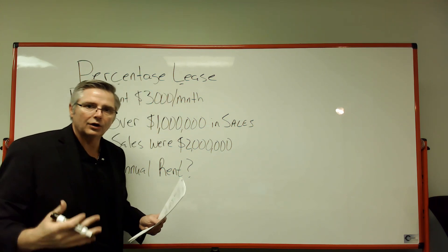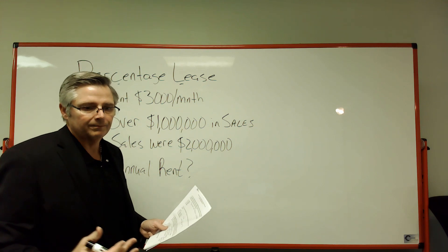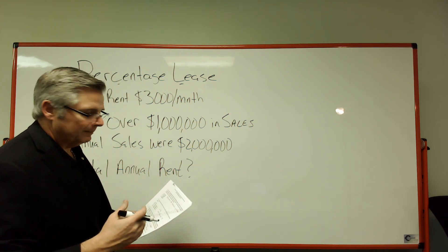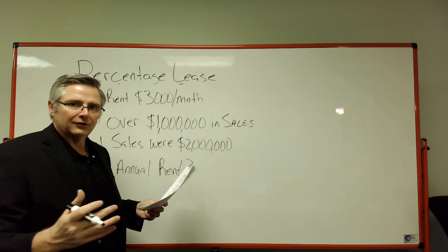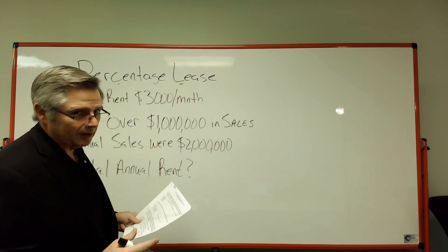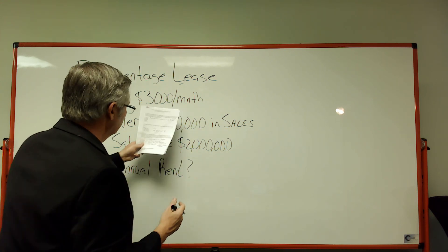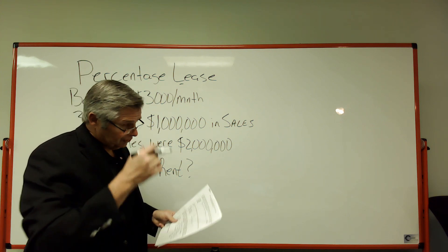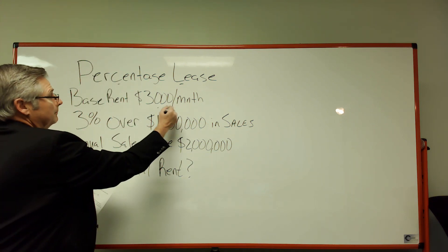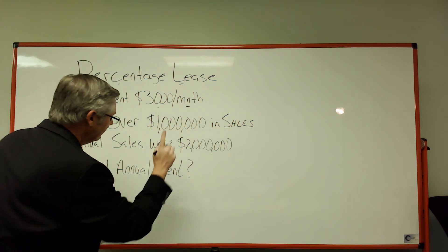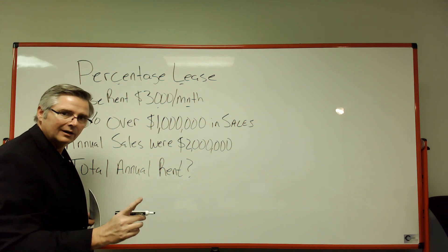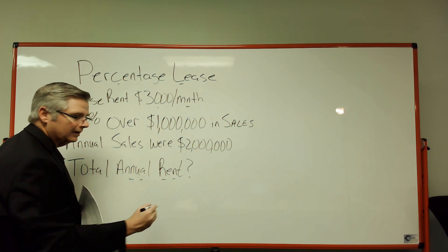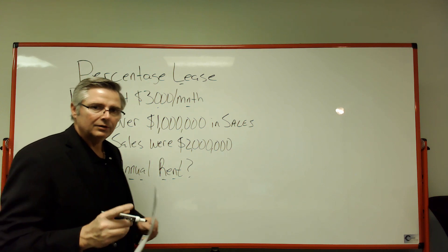So I have written this out - it's a percentage lease, which could also be called an overage lease. What that means is if they make a certain amount of money, they're going to charge them a little extra. But there's another factor here: you've got a monthly base rent that they gave you - a three thousand dollar base rent per month.